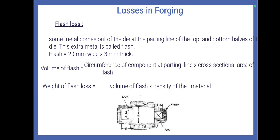The cross sectional area of flash is nothing but flash thickness multiplied by the flash width. This is the formula used to calculate the flash loss.